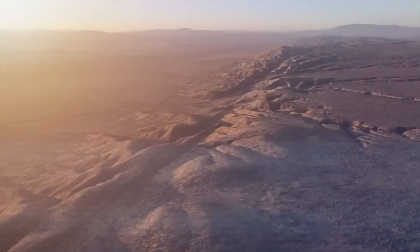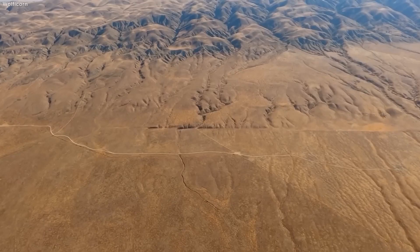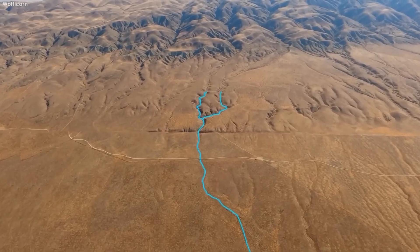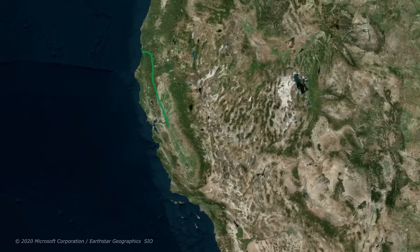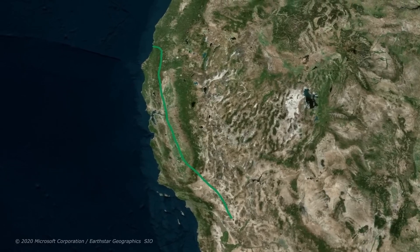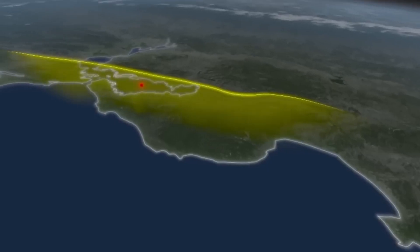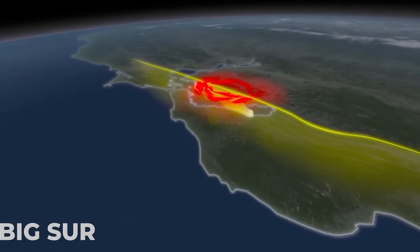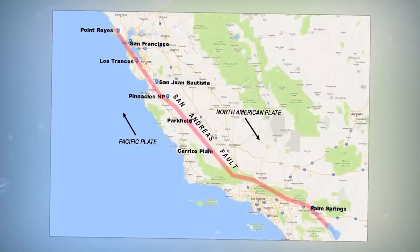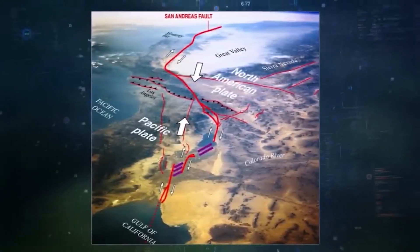The Pacific Plate and the North American Plate are separated by the San Andreas Fault, which is a sliding border. It divides the state of California in half from Cape Mendocino to the border with Mexico. The Pacific Plate is located in the cities of San Diego, Los Angeles, and Big Sur. On the North American Plate lies the cities of San Francisco and Sacramento, as well as the Sierra Nevada Mountains.